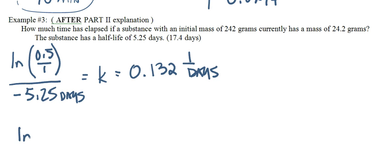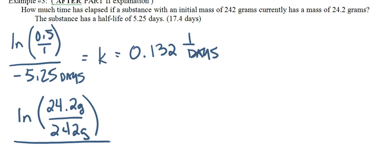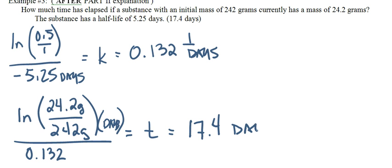My k is 0.132, and that is 1 over days. So now that I have my k value, now I can do a lot of things. It wants to know how much time has elapsed. So now I'm going to plug in those values. So I have 24.2 grams, 242 grams. And let's plug in our k, that will give us our amount of time, 0.132. Natural log of 24.2 divided by 242, that's actually 0.10, divided by negative answer, 17.44 days.